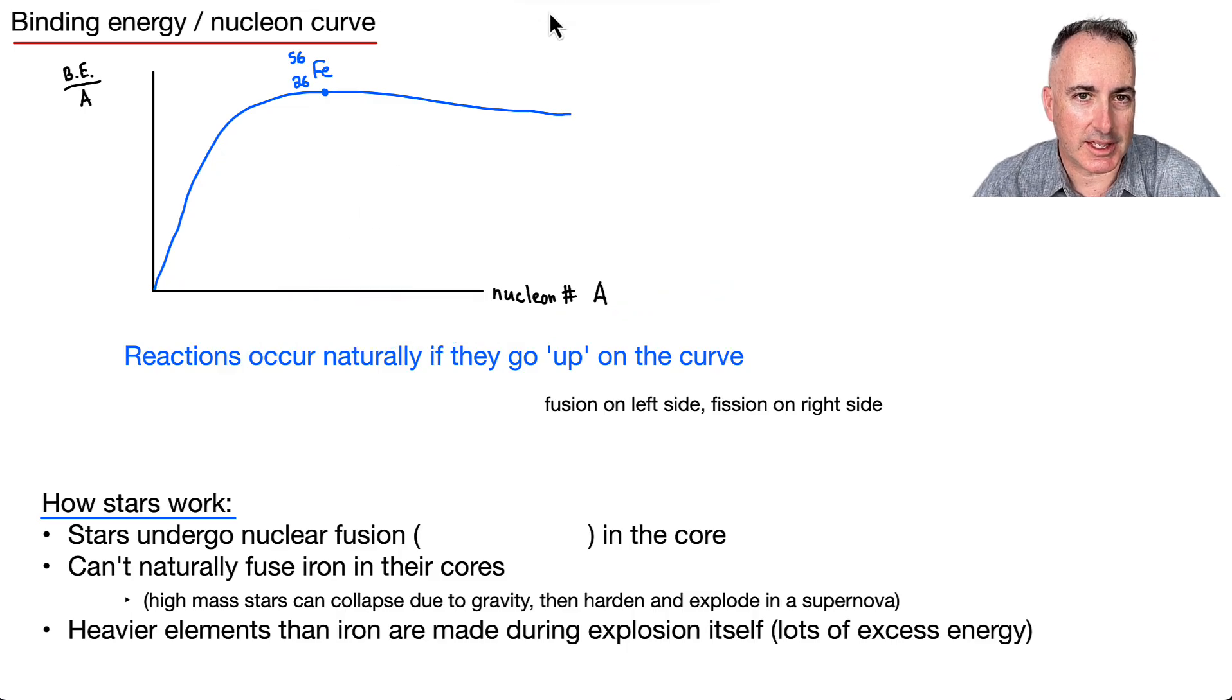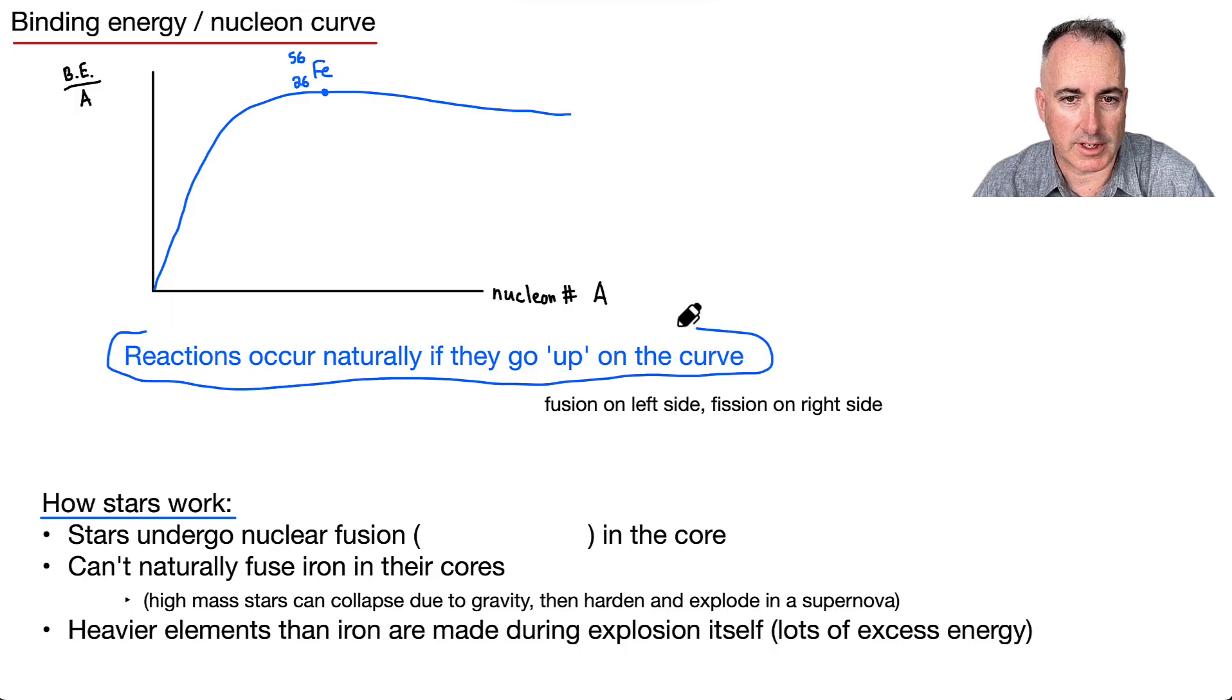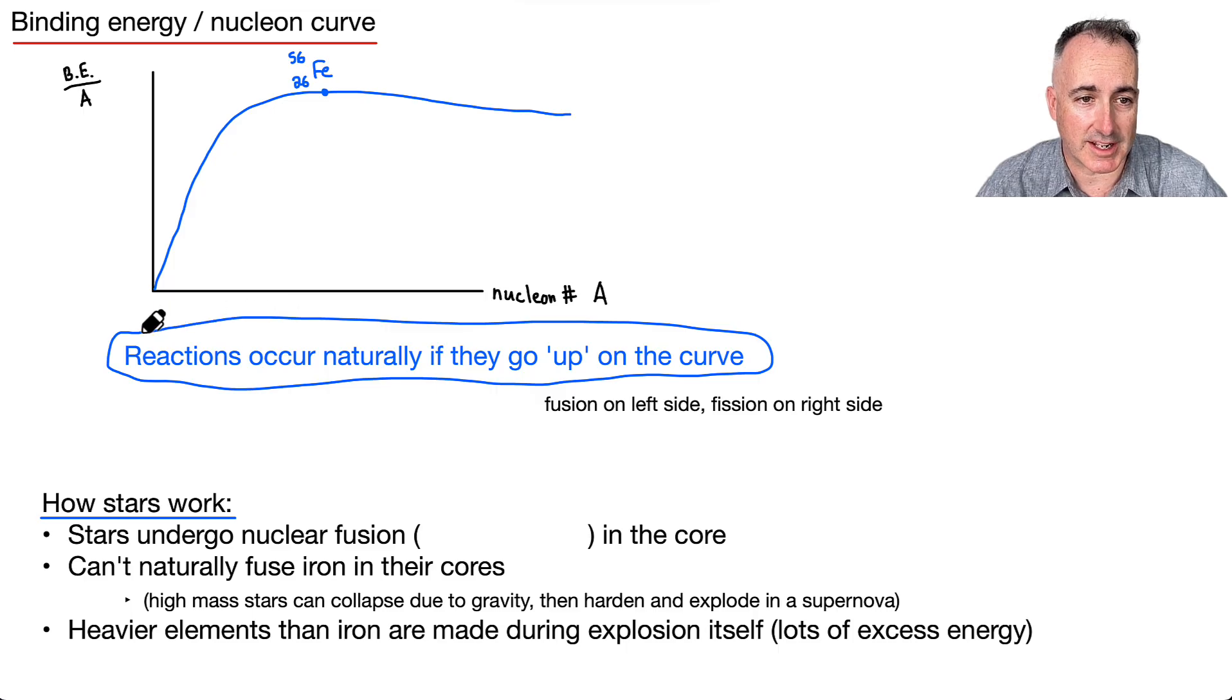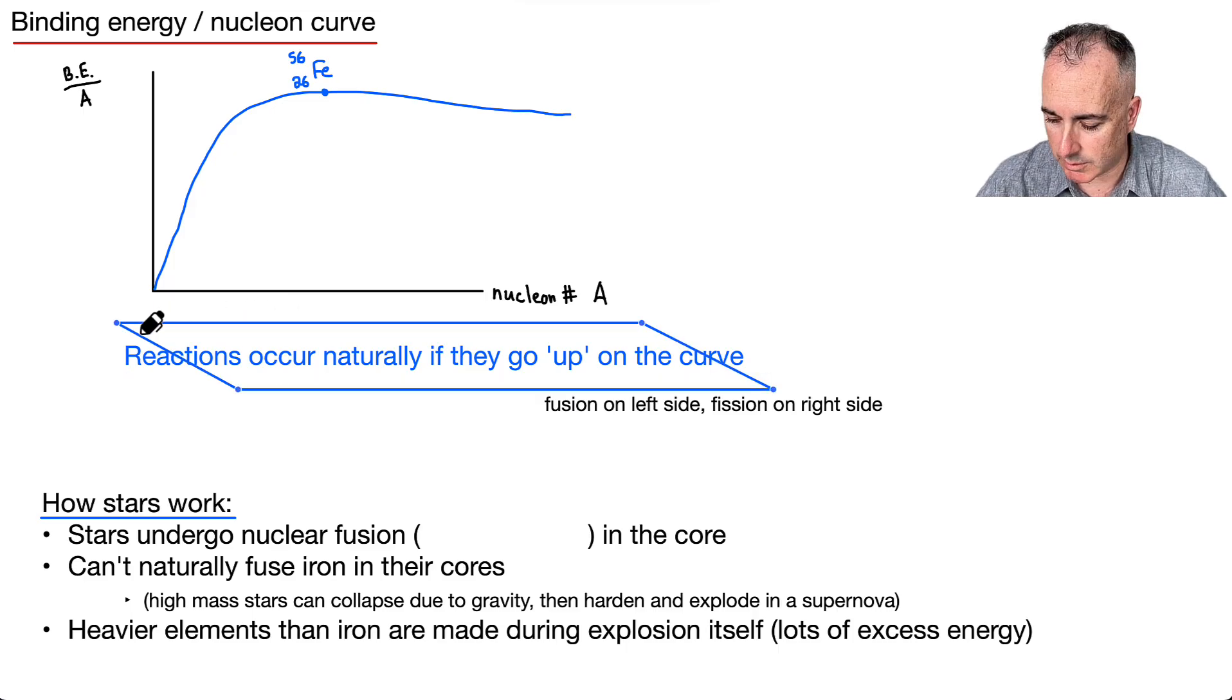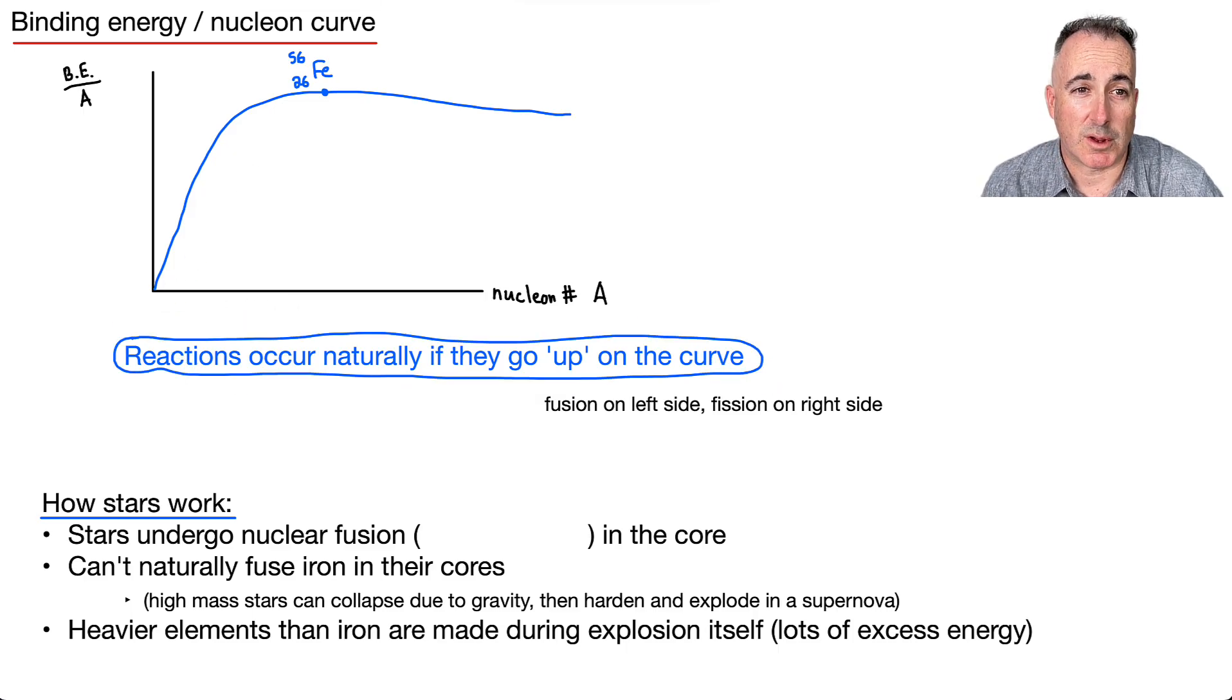So the key thing here is that reactions are going to occur naturally. So they're going to happen in nature, for example, only if you're going up in the curve. At least that's how they'll happen easily. So what do I mean by that? Well, that means if you're going to have something in nature, it wants to go up in this curve. Now, of course, if you're on this side, going up means you have to go to the right. Okay, so that means over here, for example, this is what we call fusion.